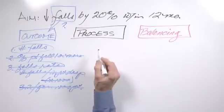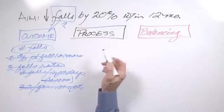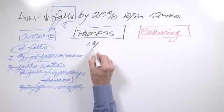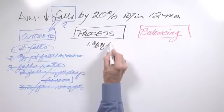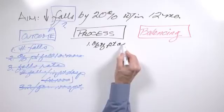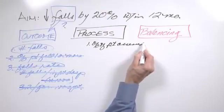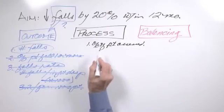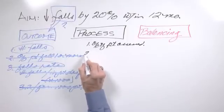Now, we have the process measures. There could be many process measures. One might be the percent of patients properly assessed at time of arrival and admission for falls. We have numerous falls assessment tools.